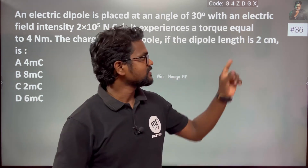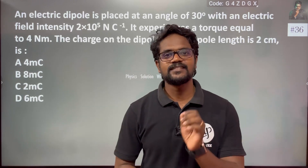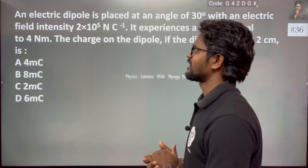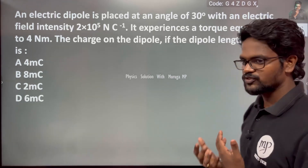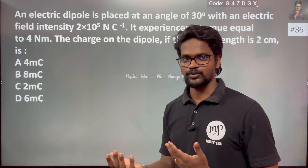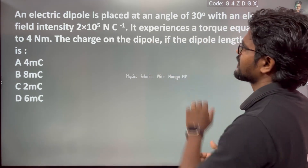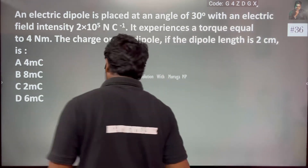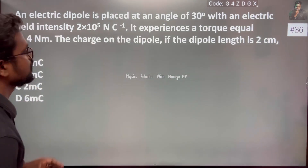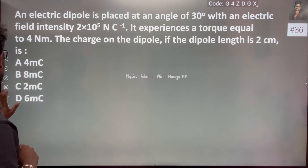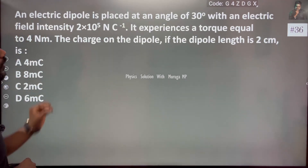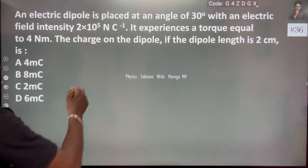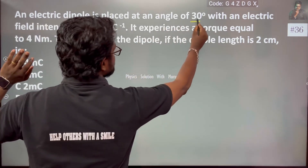Hi everyone. So, question 36. An electric dipole — which is like positive and negative charges equal in magnitude — is placed at an angle of 30 degrees with an electric field. Theta is clearly given as 30 degrees with the electric field.